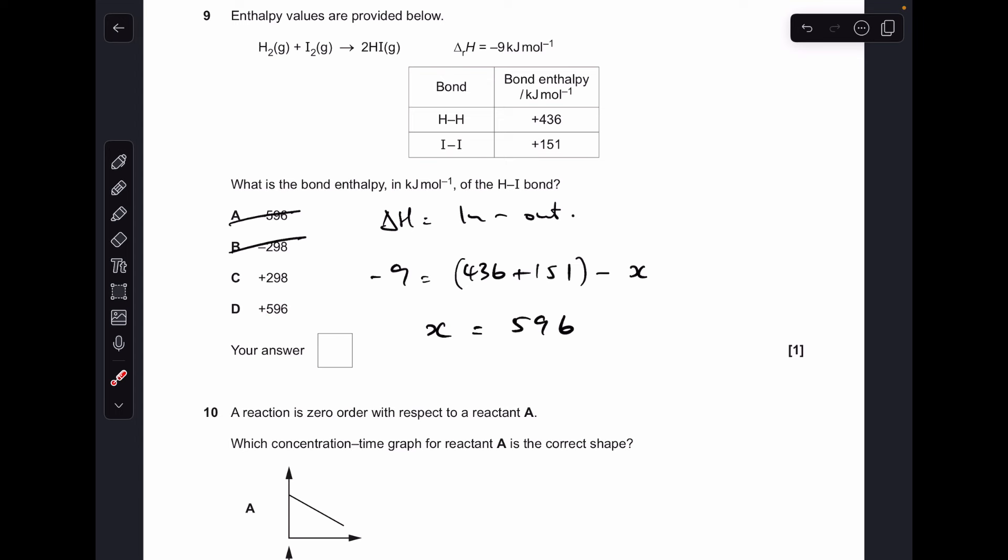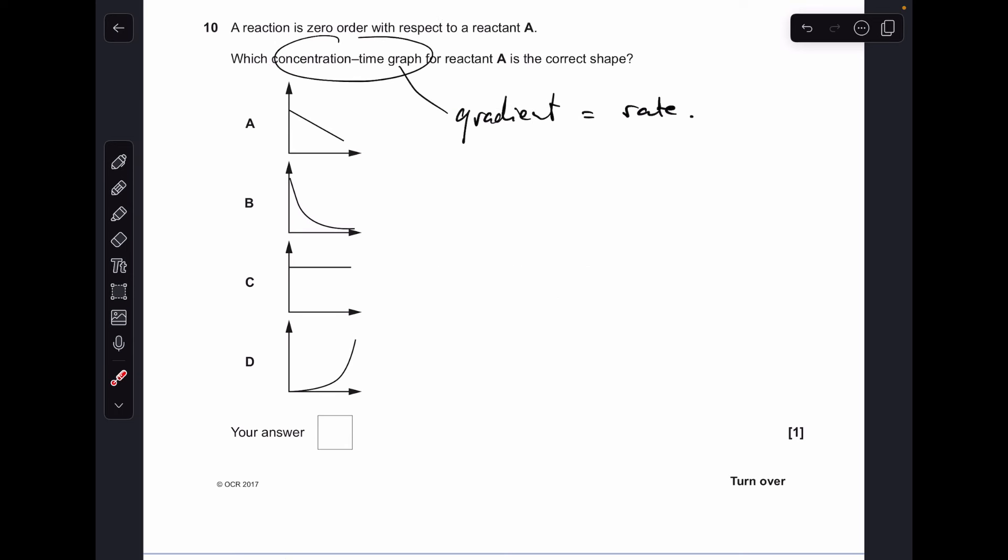Number 10, so in a concentration time graph the gradient is equal to the rate. We're told it's zero order reaction so the rate has to stay constant, so D can't be right, B can't be right because the gradients are changing in those two graphs. So the next thing we can do is rule out C because the gradient of that is zero would mean the rate is zero. So that one there is the answer, that's a constant gradient constant rate so A was the answer.